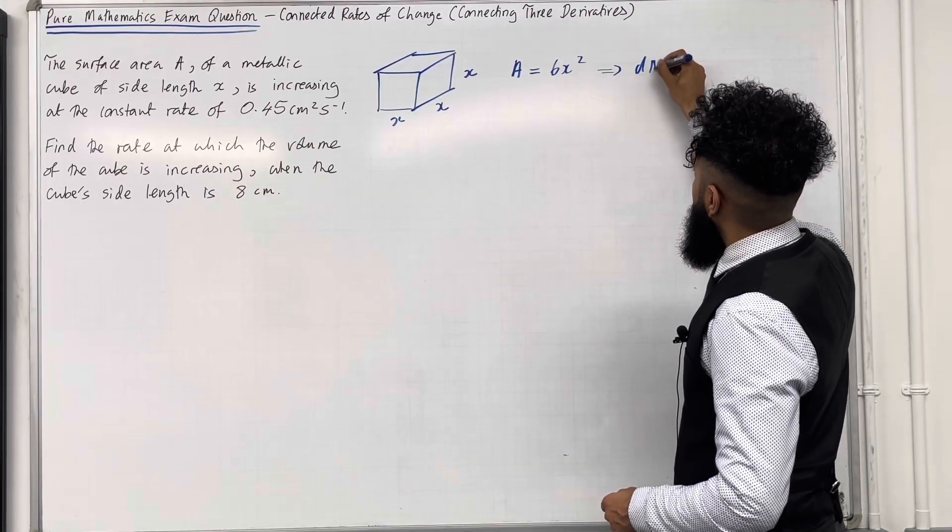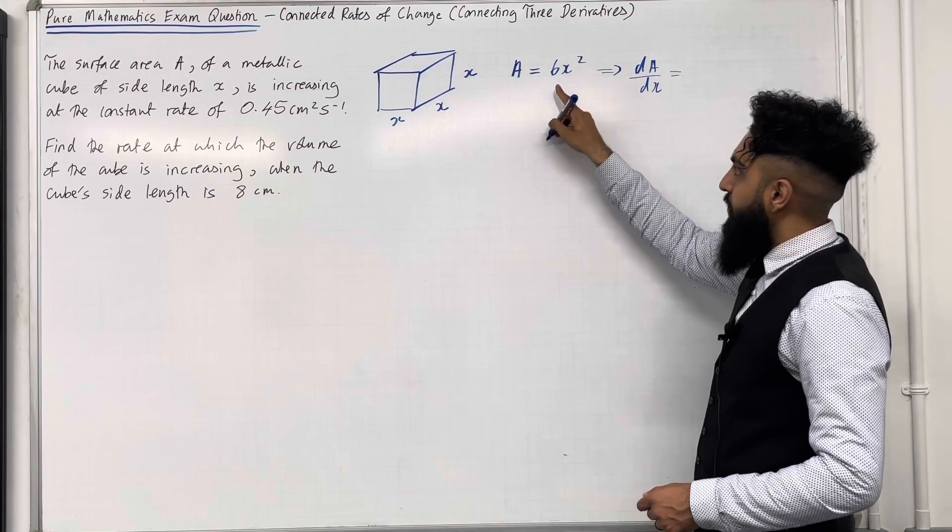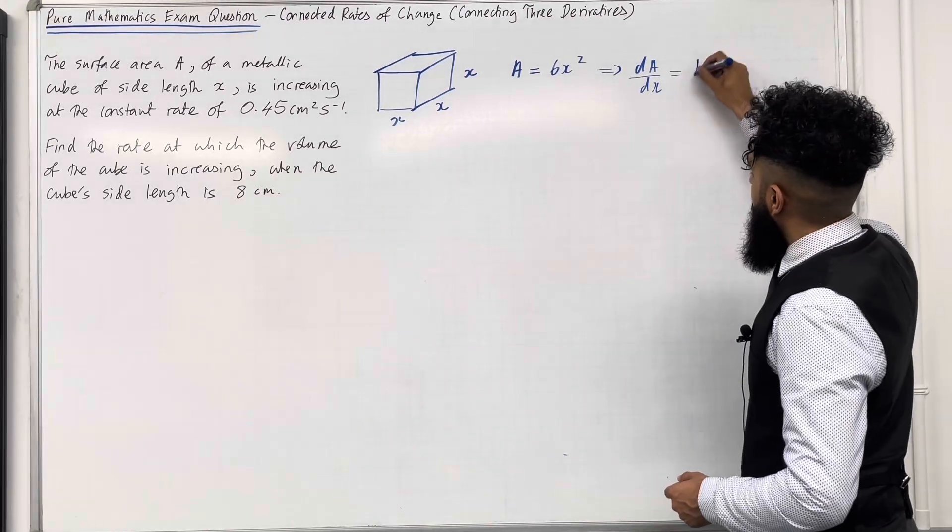Now, this implies that dA over dx will equal, bring down the power, subtract 1 from the power, 12X.